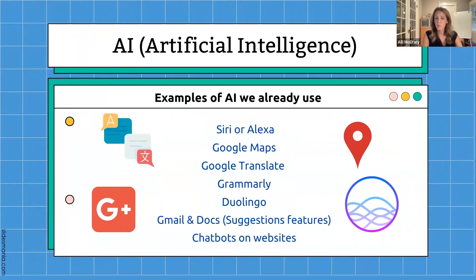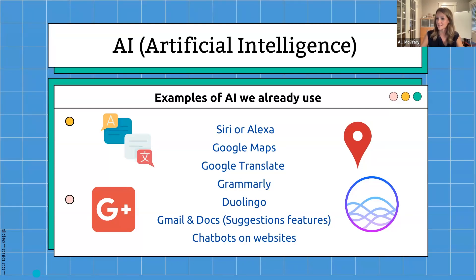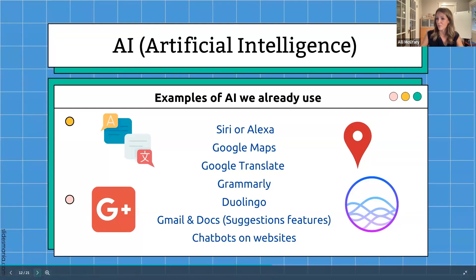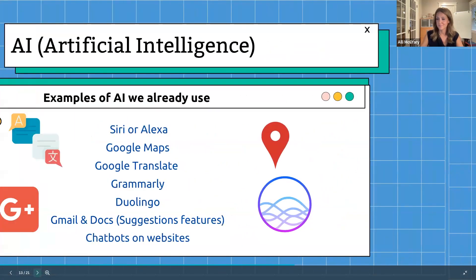Some of the AI that you probably used this week: Siri, Alexa, Google Maps, Google Translate, Grammarly, Duolingo, etc. When you're on your phone and you start to type a message to a friend and it fills in the words, that's an example of AI that we're already using.